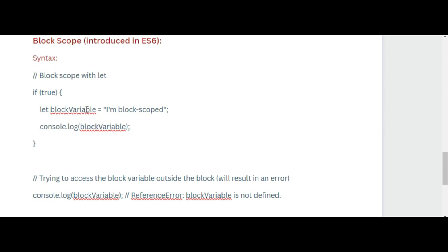Here is the block scope syntax: if(true) { let blockVariable = 'block scope'; console.log(blockVariable); }. Trying to access blockVariable outside the block will result in a ReferenceError: blockVariable is not defined. So blockVariable is declared inside the if block, giving it block scope, and attempting to access it outside results in a ReferenceError.